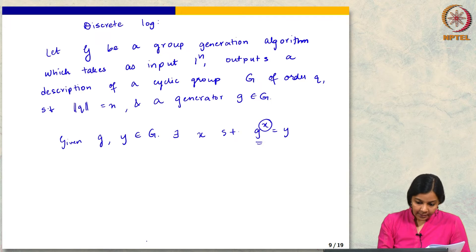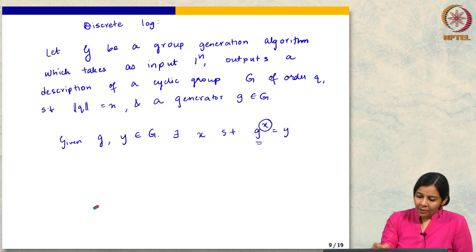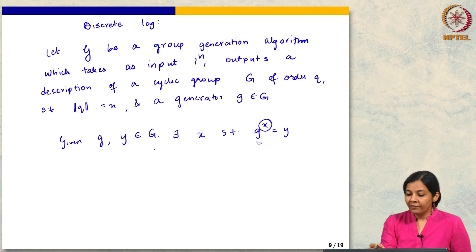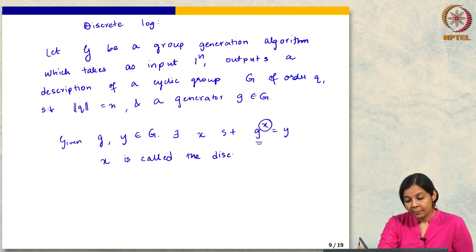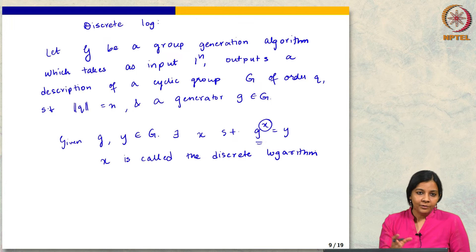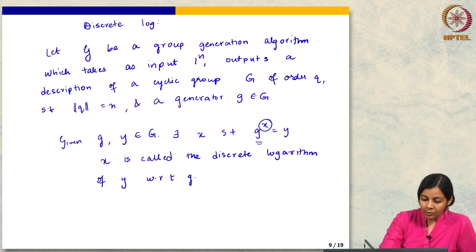For concreteness, thinking of the operation as multiplication: given a generator g and some y in the group, there exists some x such that g to the x equals y, because g is a generator and by definition I can use it to generate y. The name is obvious — it is a logarithm and it is discrete because it takes discrete values. This is the discrete logarithm of y with respect to small g.